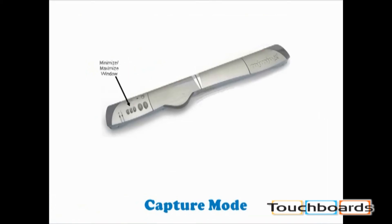In Capture mode, the fourth button is Maximize Minimize Window. It works as a toggle switch. If I press the button once, the screen is maximized. When I press it again, the screen is minimized. Pressing again will restore the screen.